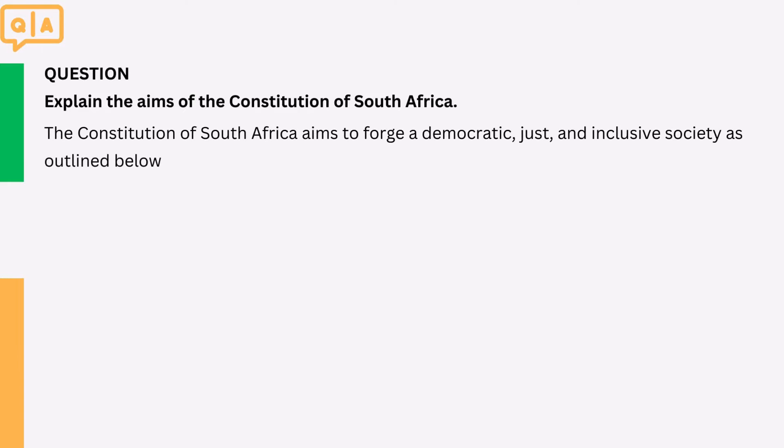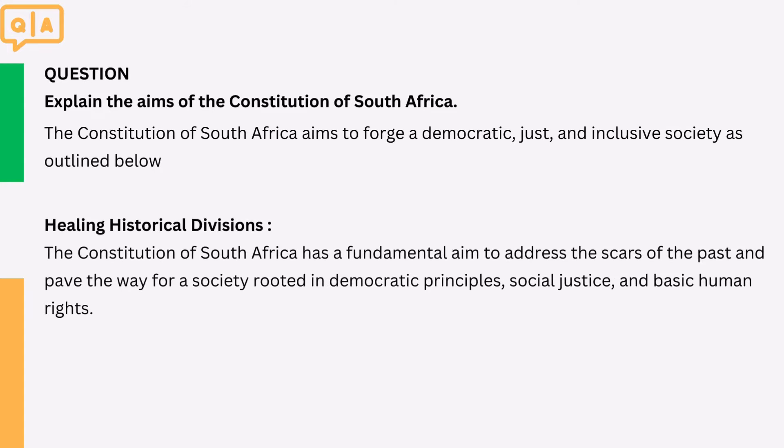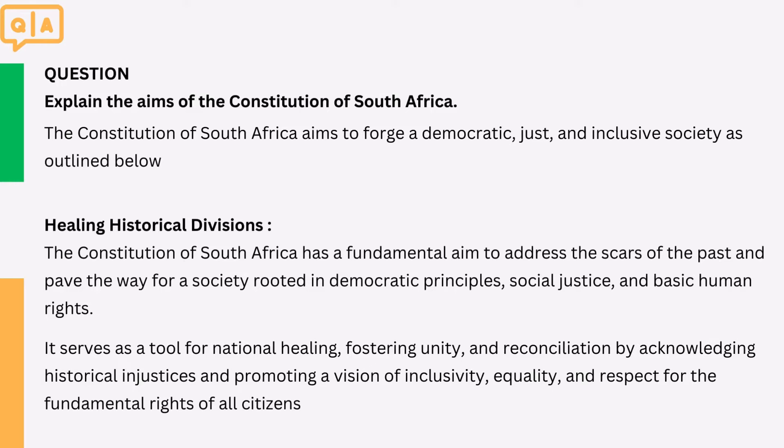The Constitution of South Africa aims to forge a democratic, just, and inclusive society as outlined below. 1. Healing Historical Divisions. The Constitution of South Africa has a fundamental aim to address the scars of the past and pave the way for a society rooted in democratic principles, social justice, and basic human rights. It serves as a tool for national healing, fostering unity and reconciliation by acknowledging historical injustices and promoting a vision of inclusivity, equality, and respect for the fundamental rights of all citizens.